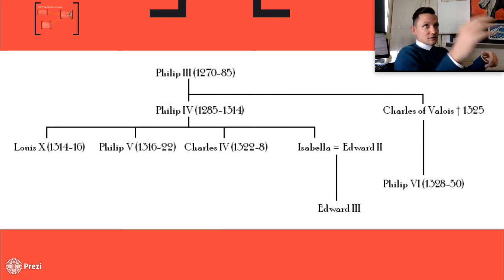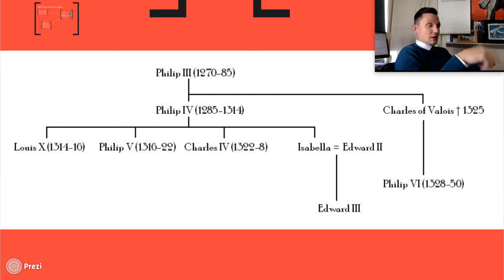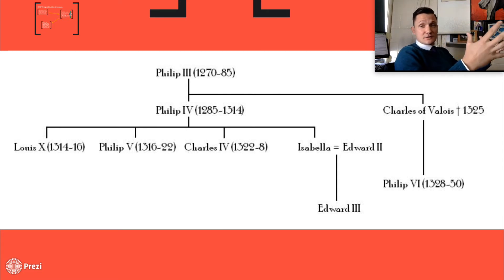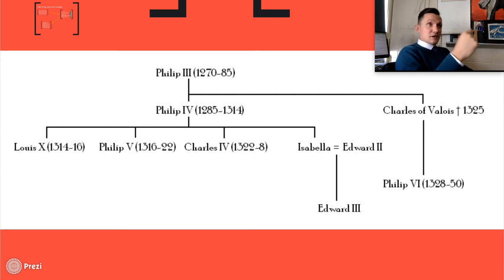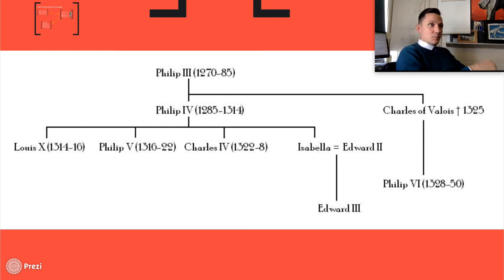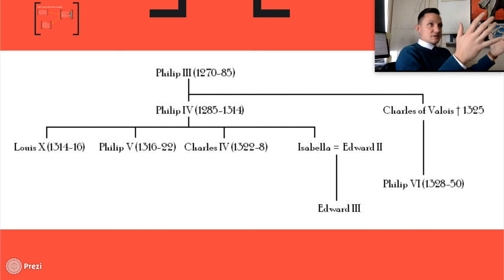Within feudalism, your king, your lord, your vassal, your serfs — what they give back to the empire in this very defunct time period. Clovis consolidates the Franks, Charlemagne consolidates the Holy Roman Empire, and we get the first countries and cities popping up.